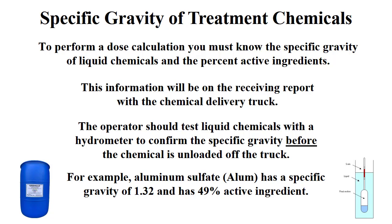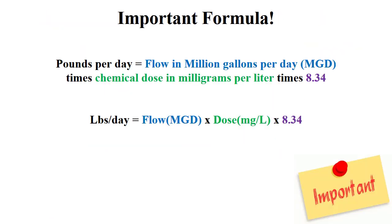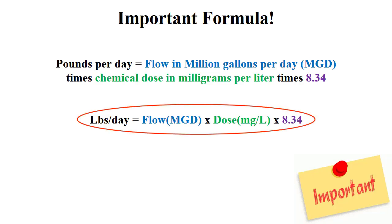It is important to know the active ingredient since only 49% of the alum you feed at your plant will coagulate the water. An important formula for calculating feed rate is: pounds per day is equal to flow in million gallons per day, or MGD, times the dose in milligrams per liter, times the constant 8.34. This formula is very important and should be memorized by water treatment plant operators.